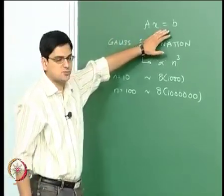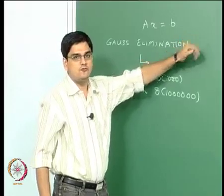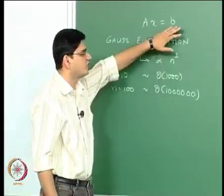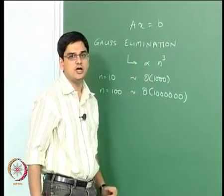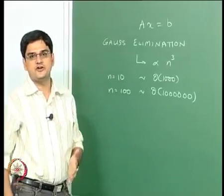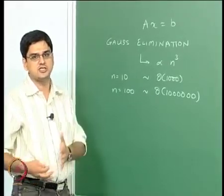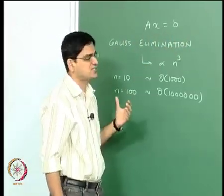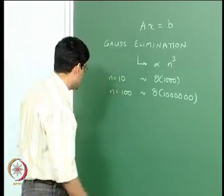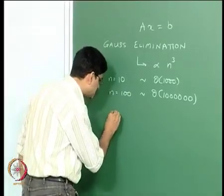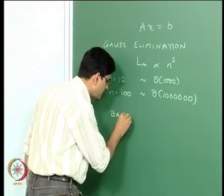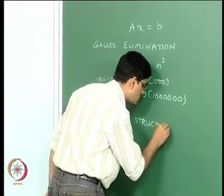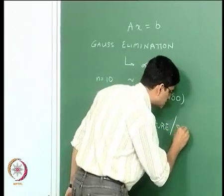For a general purpose problem Ax equal to b, we do not have a choice because Gauss elimination turns out to be one of the more efficient ways of solving it. However, a lot of problems of interest to engineers — chemical engineers, mechanical engineers and so on — are not general purpose problems. They have a specific structure, known as a banded structure or a sparse structure.